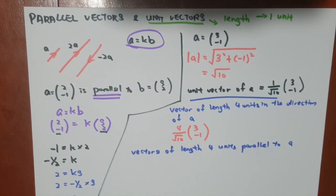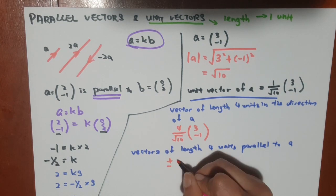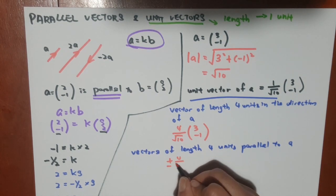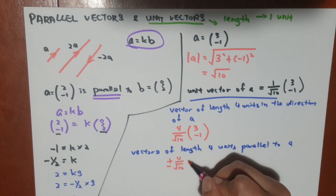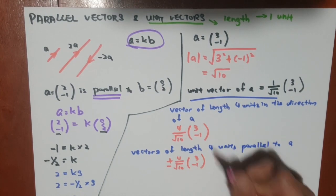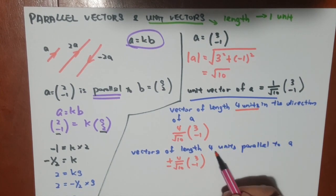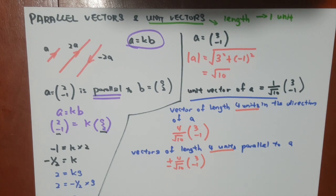So in order to solve a question like that, all we have to do is add the positive and negative in front of the answer that we found previously, because the answer we found previously is already 4 units in length. So that would be the answer.